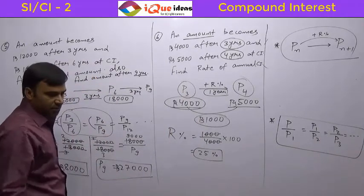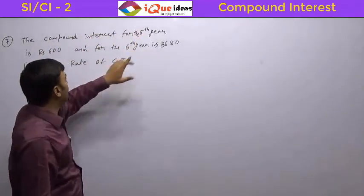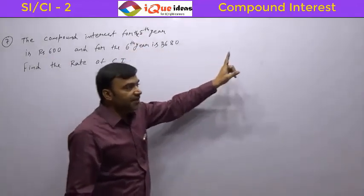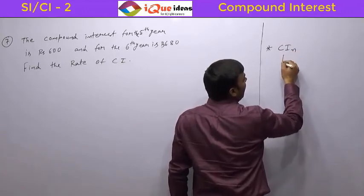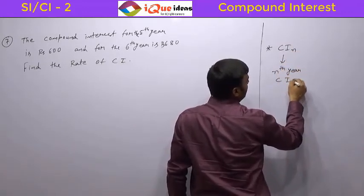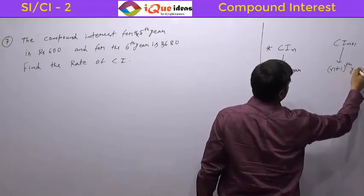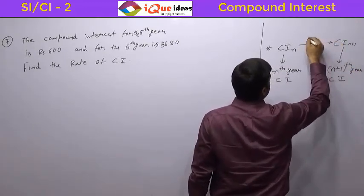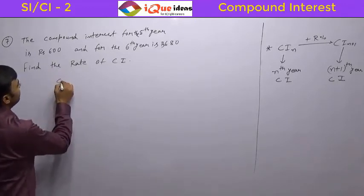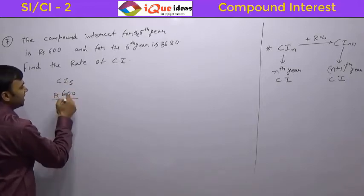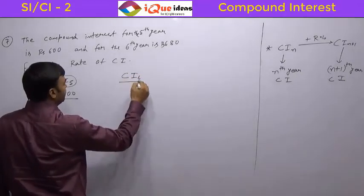Now let us take another question. This question says the compound interest for the 5th year is Rs. 600 and for the 6th year is Rs. 680. We have a similar rule for compound interest values: CI for the nth year and CI for the n+1th year — the compound interest also increases at the same rate. CI5 is Rs. 600, and CI6, the interest for the 6th year only, is Rs. 680.